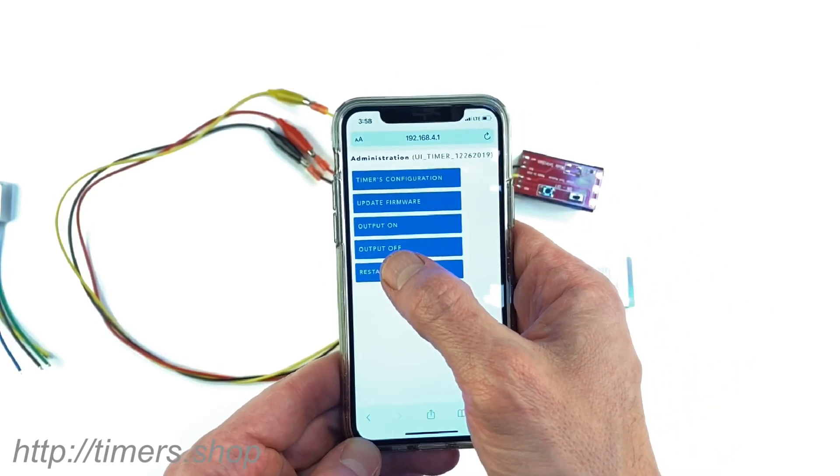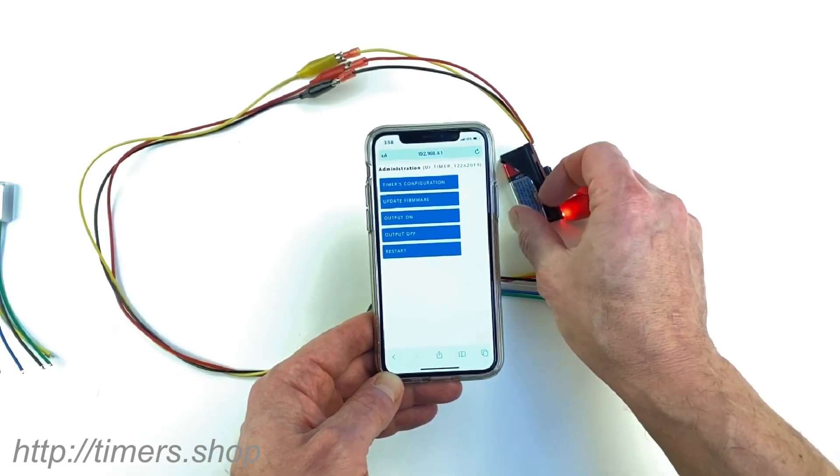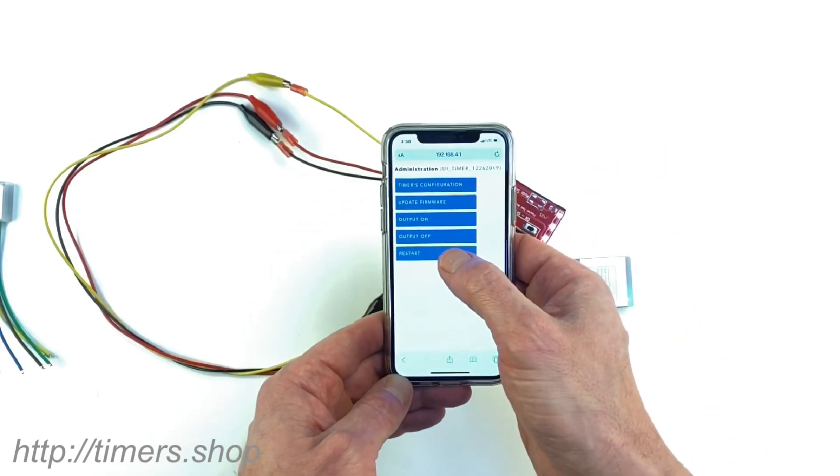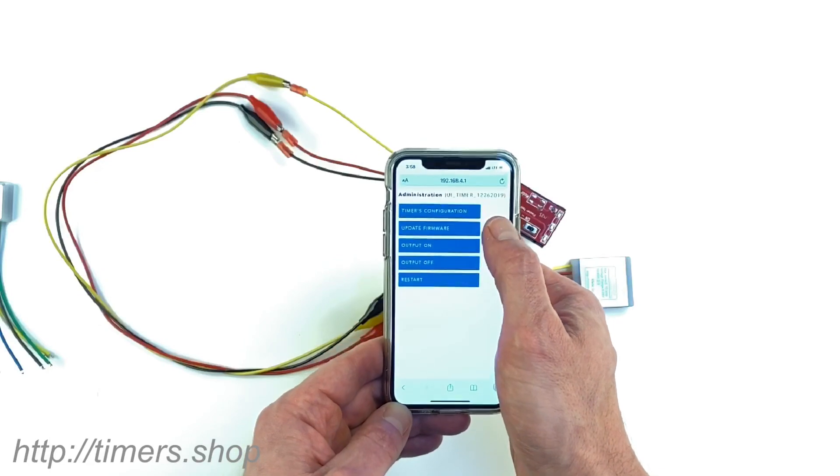If you want to test your output, you can just turn the power on via the app, turn the power off so that you can easily test your output update.